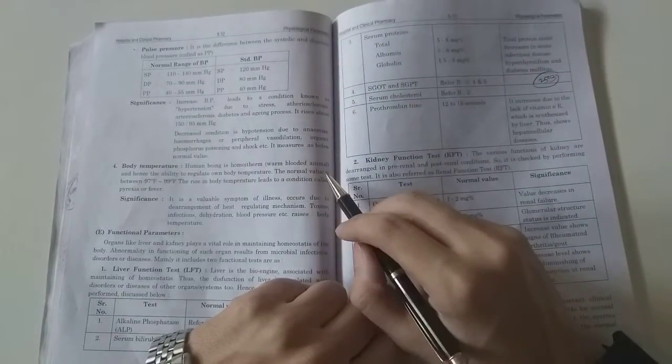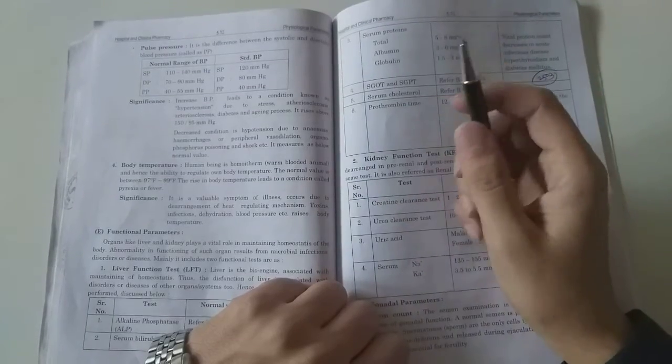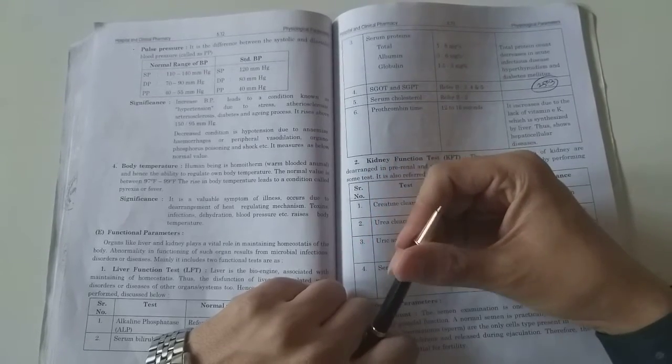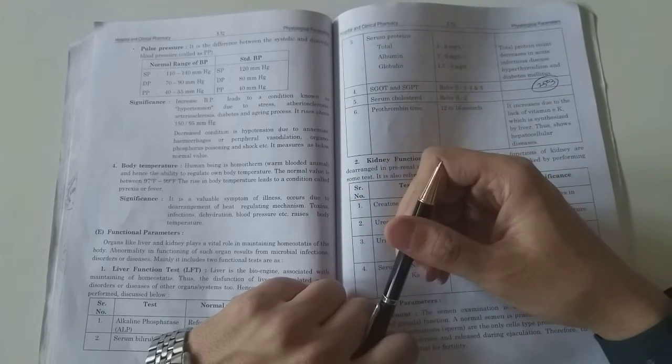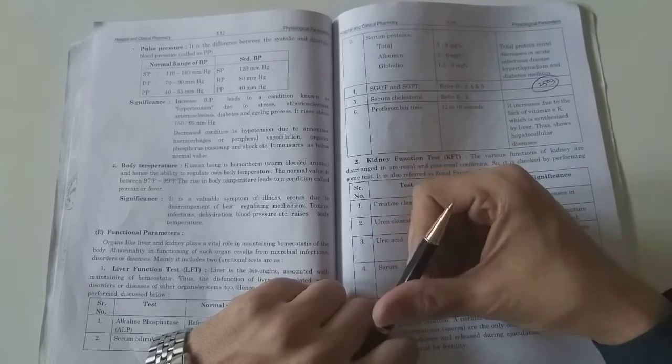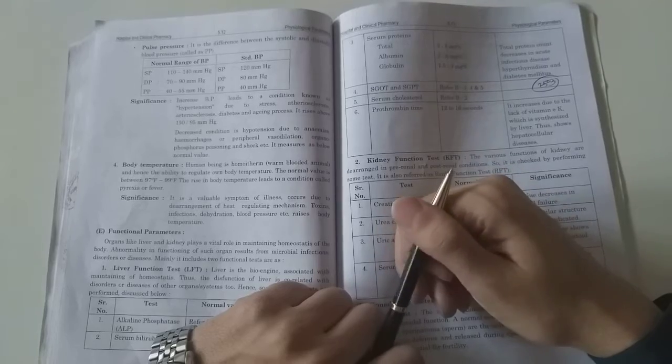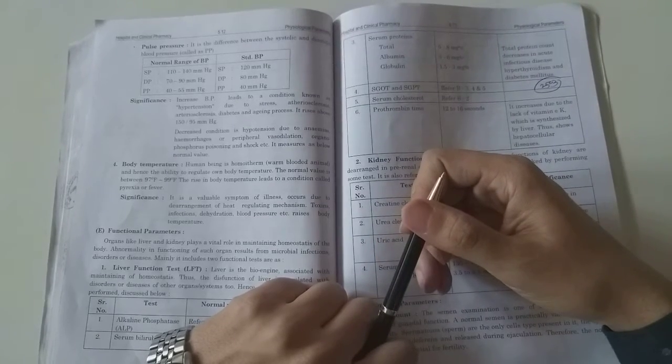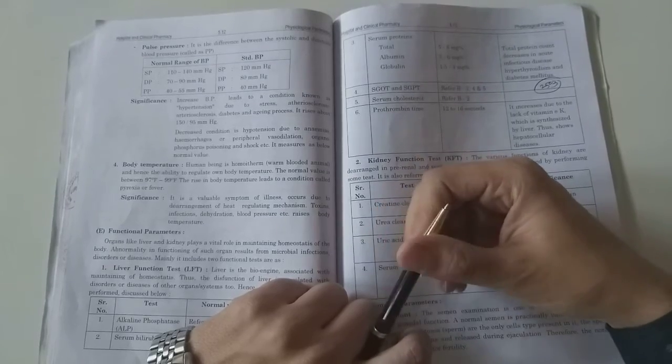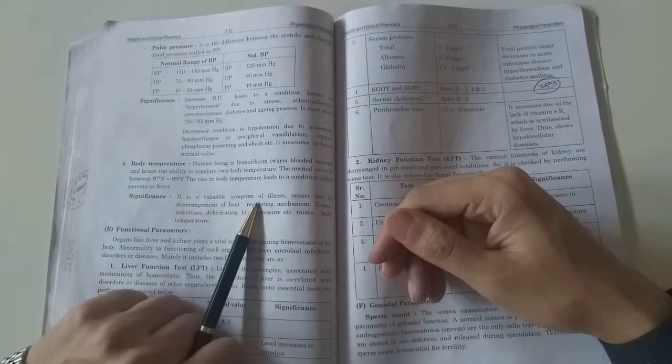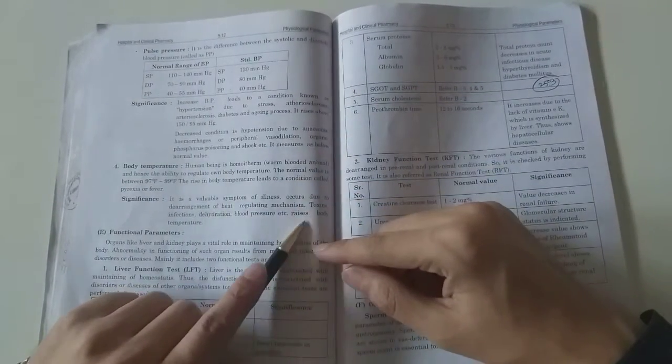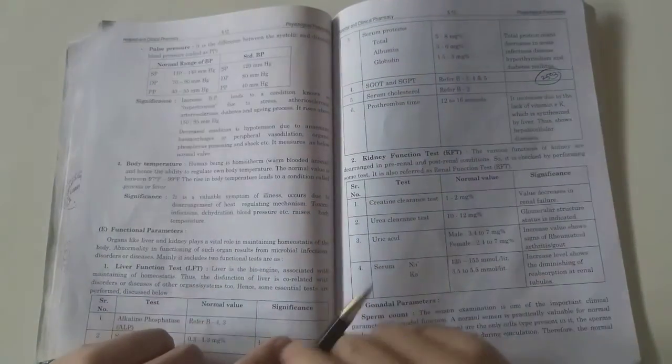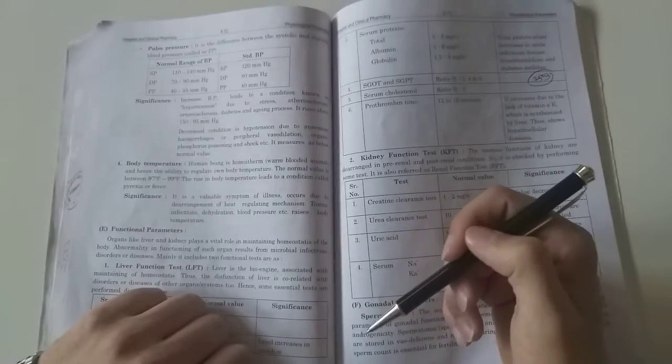Body temperature: human beings are warm-blooded animals with the ability to regulate their own body temperature. Normal value is between 97 to 99 Fahrenheit or 37 degrees Celsius plus or minus. The rise in body temperature leads to pyrexia and fever. It is a valuable symptom of illness due to derangement of heat regulation mechanism, infection, or dehydration. If our body has a problem, body temperature increases.